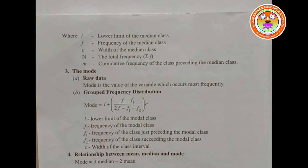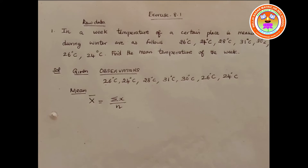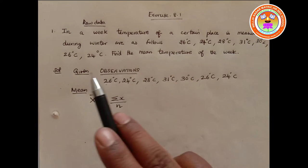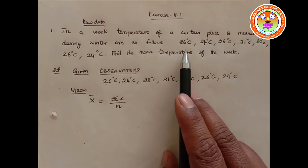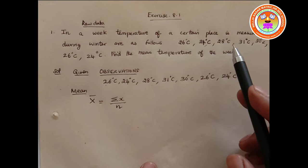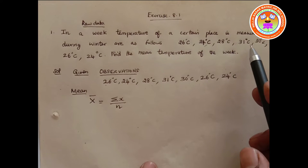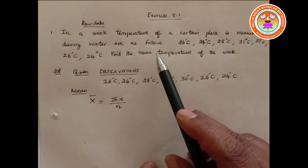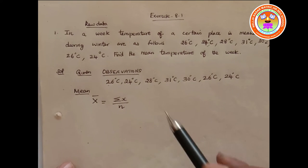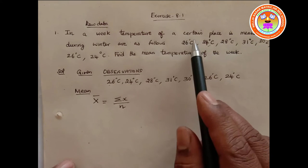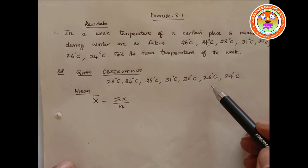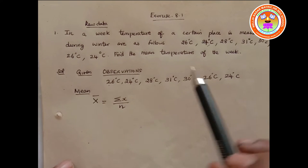Let's start the exercise problems. Problem 1: Temperature of a certain place measured during winter is as follows — 26°C, 24°C, 28°C, 31°C, 30°C, 26°C, and 24°C. Find the mean temperature. This is raw data. The given observations are 26, 24, 28, 31, 30, 26, and 24 degrees Celsius.